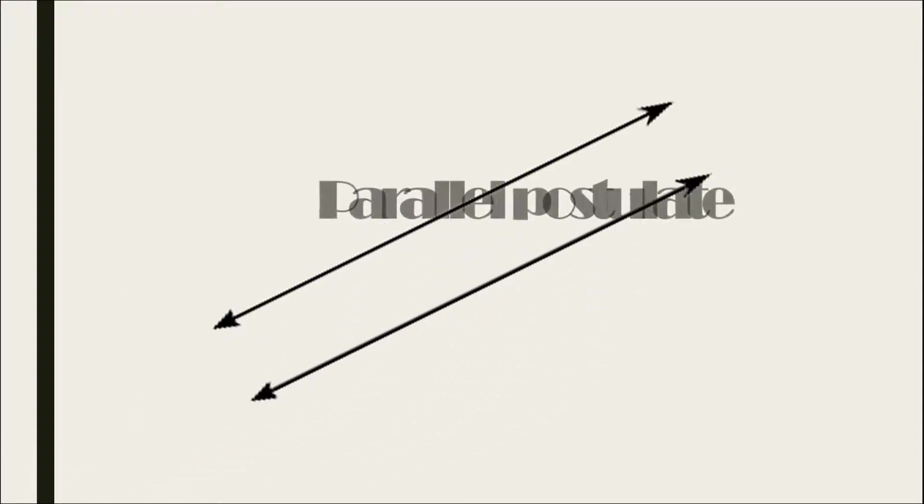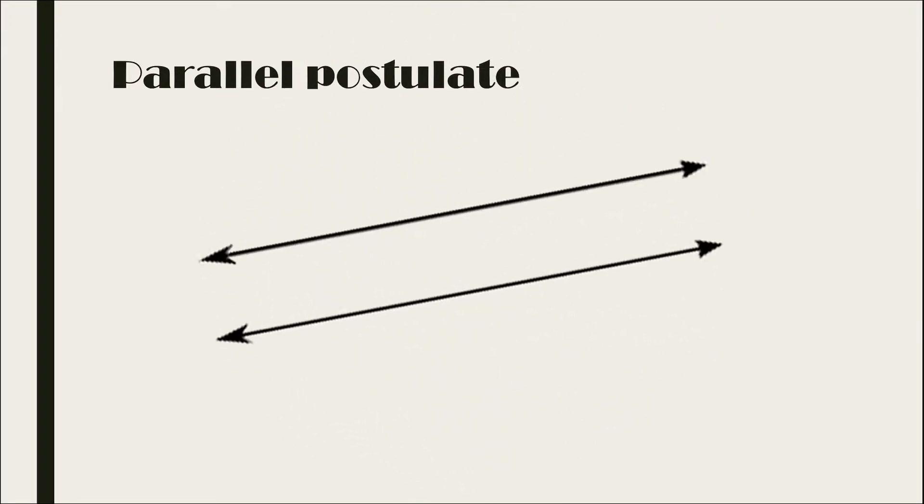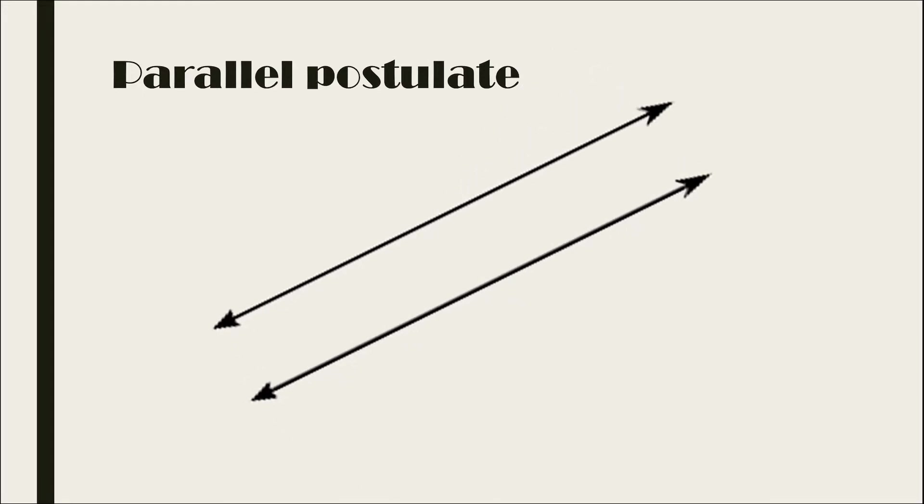The fifth axiom is known as the parallel postulate, its moniker referencing the unique properties of parallel lines. The controversy stems from mathematicians of old attempting to prove that the parallel postulate was a natural consequence of the first four axioms. After 2000 years, nobody had yet succeeded.